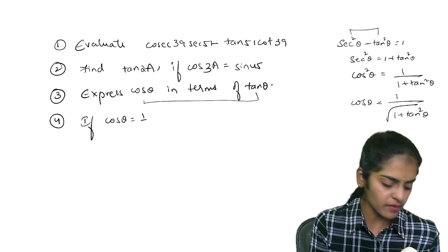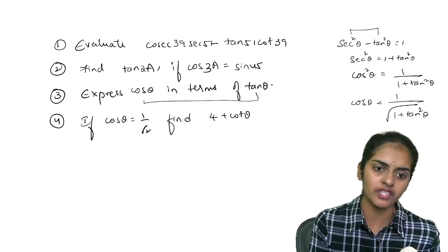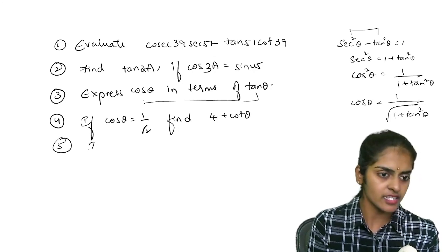If cos theta is 1 by root 2, find 4 plus quad theta. Please do all these questions. These are easy. Next question.